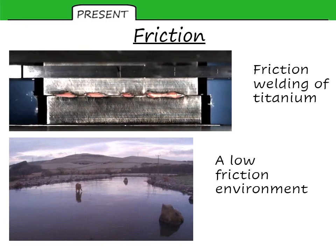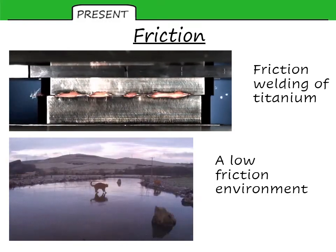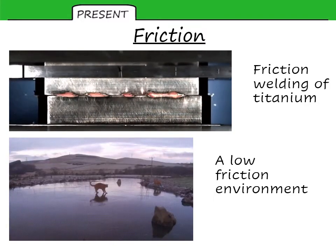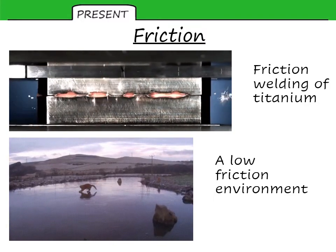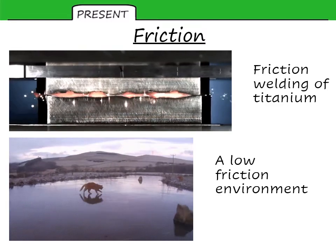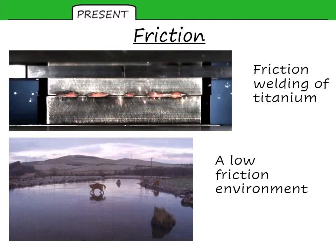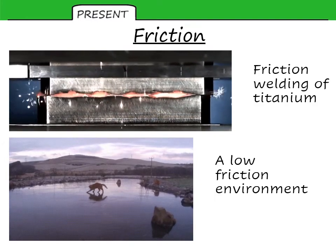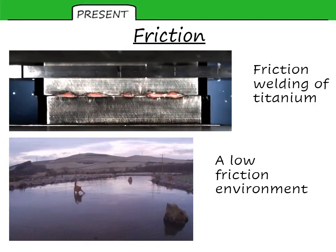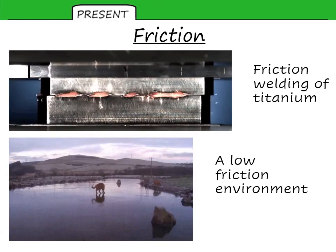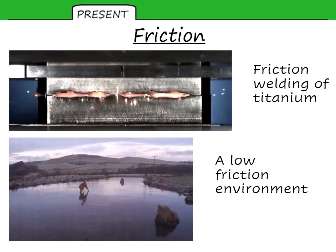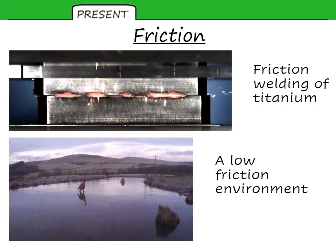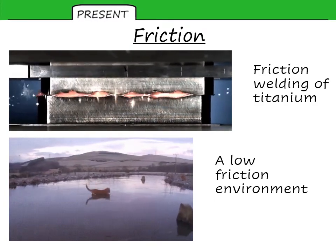The first example we'll look at is friction. In the top picture you can see some friction welding of titanium — this is actually a slow-down image, the real one is much faster. Those forces are enough to cause a heating effect and eventually the two pieces of metal to weld together. In a low friction environment, you have no grip and you'll slip all over the place. Again, clearly contact forces at work there.